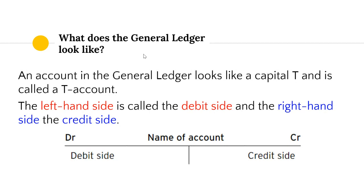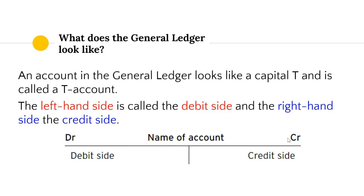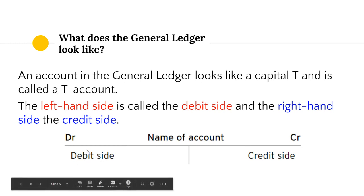An account in the general ledger looks like a capital T and is called a T-account. The left-hand side is called the debit side, abbreviated as DR, and the right-hand side is the credit side, abbreviated as CR. We list the name of the account at the top, then record information on either the debit side or the credit side.